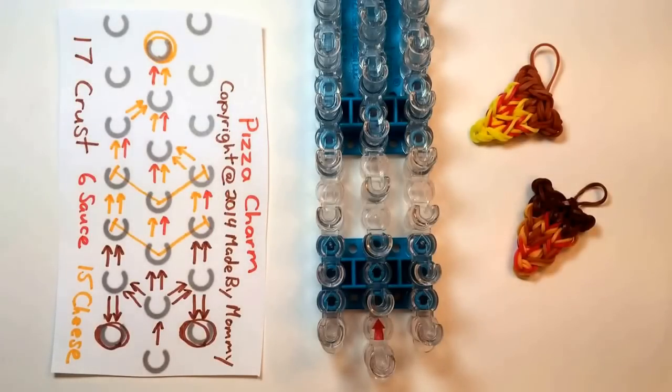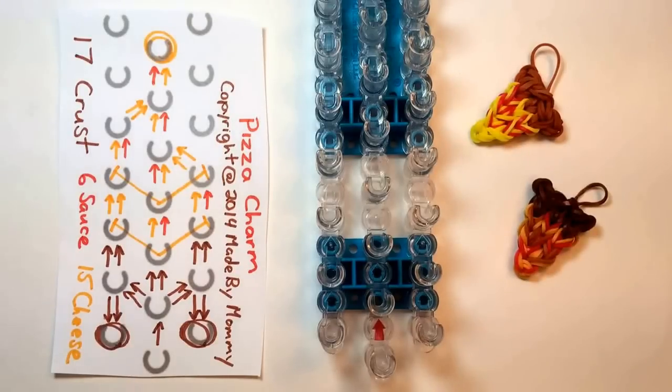The pizza charm is made using 17 rubber bands in the color you want your crust to be. I'm using Rainbow Loom brand burgundy today. You'll need 6 in the color of the sauce, so some sort of red, and then 15 rubber bands for the color of your cheese. I'm actually going to use 2 different shades of orange this time for variety.